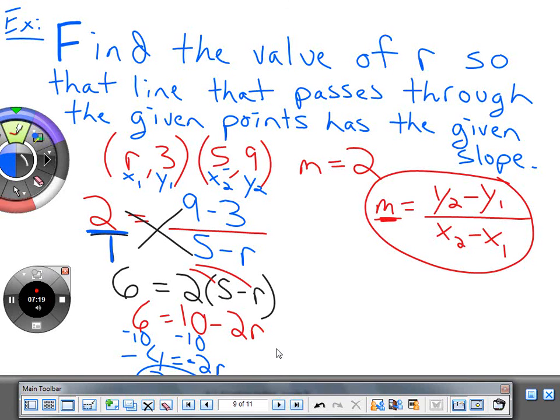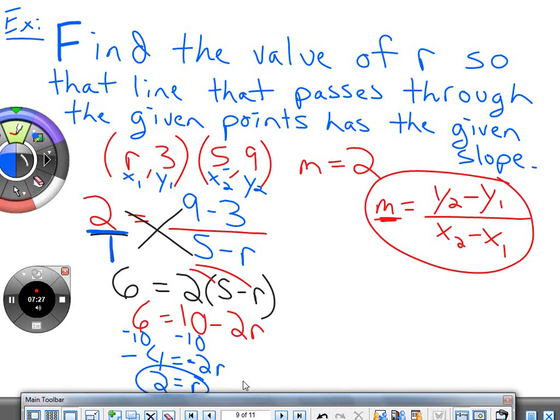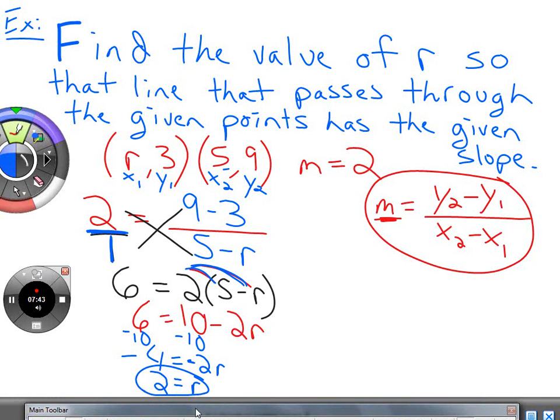Nine minus 3 is 6. We have 2 times (5 minus R). Distribute to get 10 minus 2R. Subtract 10 from both sides: 6 minus 10 equals negative 4, which equals negative 2R. Divide by negative 2 to get R equals 2. Now that we know R is 2, we can plot these points.